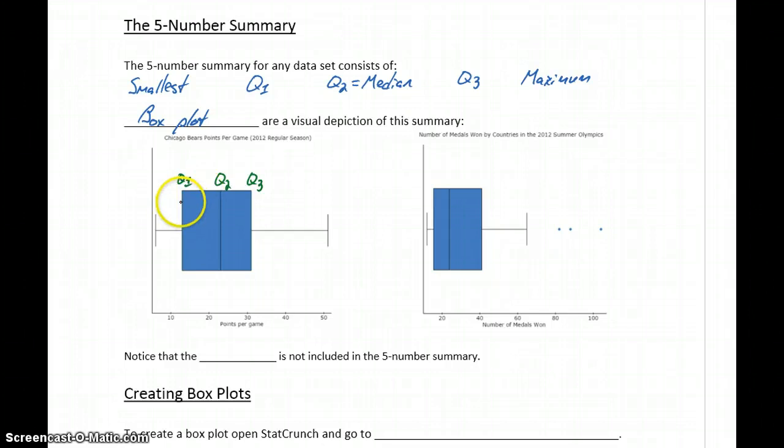Since this box is the range from Q1 to Q3, that means that entire range, which would be the distance between Q3 and Q1, represents the interquartile range, that measure of spread that we introduced.